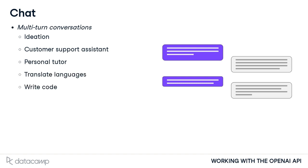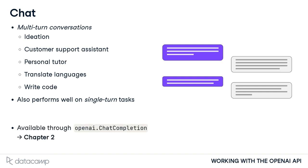Chat models also perform well on single-turn tasks, so many applications are built on top of chat models for flexibility. The OpenAI package provides the chat completion class for accessing the chat endpoint, but we'll cover how to use chat later in the course.